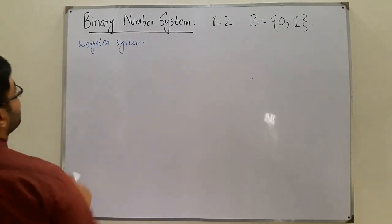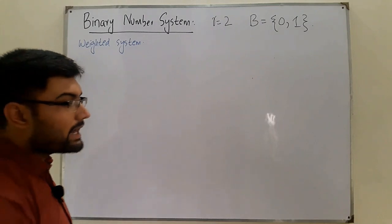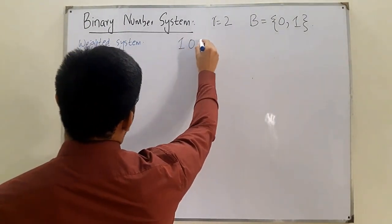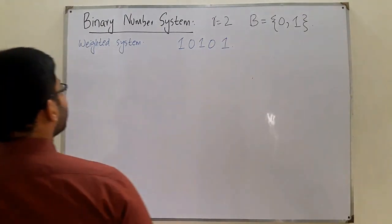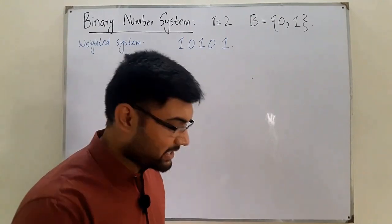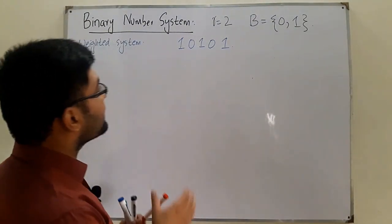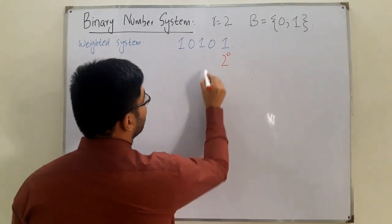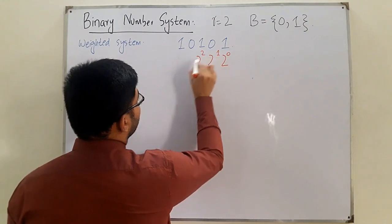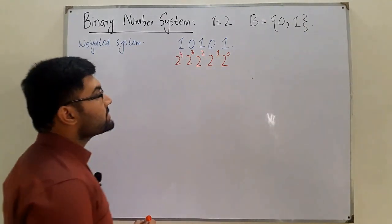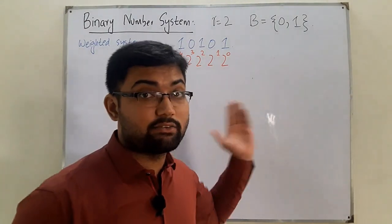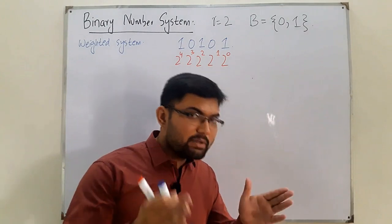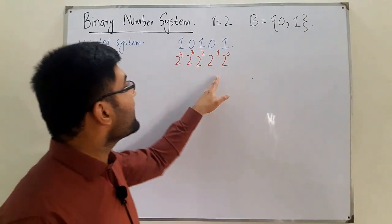Being a weighted system means each and every position has its own weight. Consider the number 1 0 1 0 1 1 0 1 0 1. This also covers binary to decimal conversion. Since the base is 2, starting from the right, the weights are 2 to the power 0, 2 to the power 1, 2 to the power 2, 2 to the power 3, and 2 to the power 4, as discussed in the previous lecture for the decimal system.